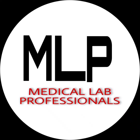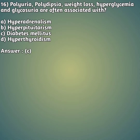Question 16: Polyuria, polydipsia, weight loss, hyperglycemia, and glycosuria are often associated with — option A: hyperadrenalism, option B: hyperpituitarism, option C: diabetes mellitus, option D: hyperthyroidism. The right answer is option C, diabetes mellitus. We can see all these symptoms — polyuria (frequent urination), polydipsia, weight loss, and hyperglycemia — are all associated with diabetes mellitus.